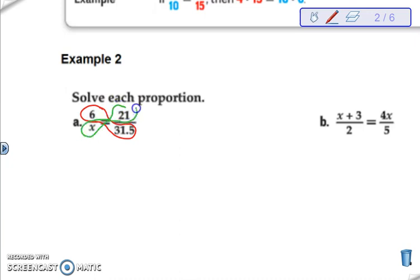Remember you are going to take the top of one fraction and multiply it to the bottom of the other fraction. So if I am solving this out, I know that 6 times 31.5 is going to give me 189. I know that 21 times x is 21x, and we remember from solving equations that we need to just divide both sides by 21. X is going to equal 9.